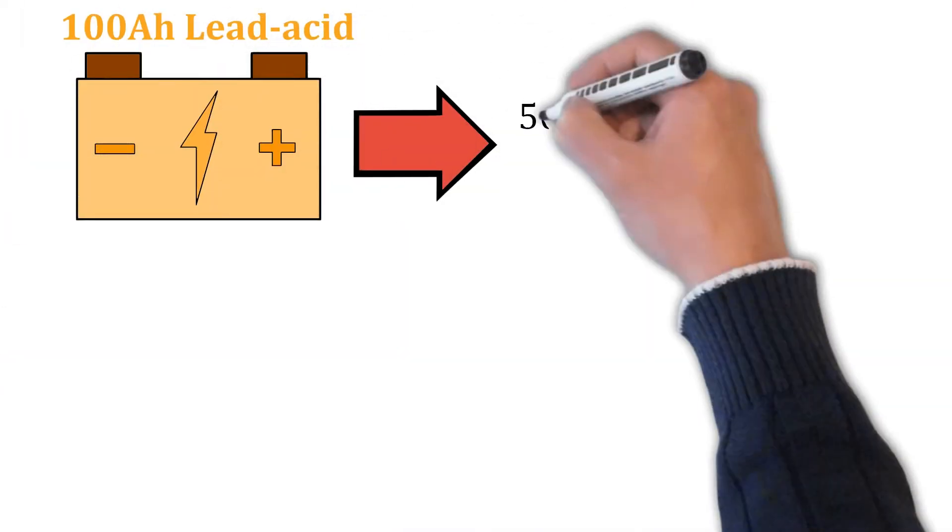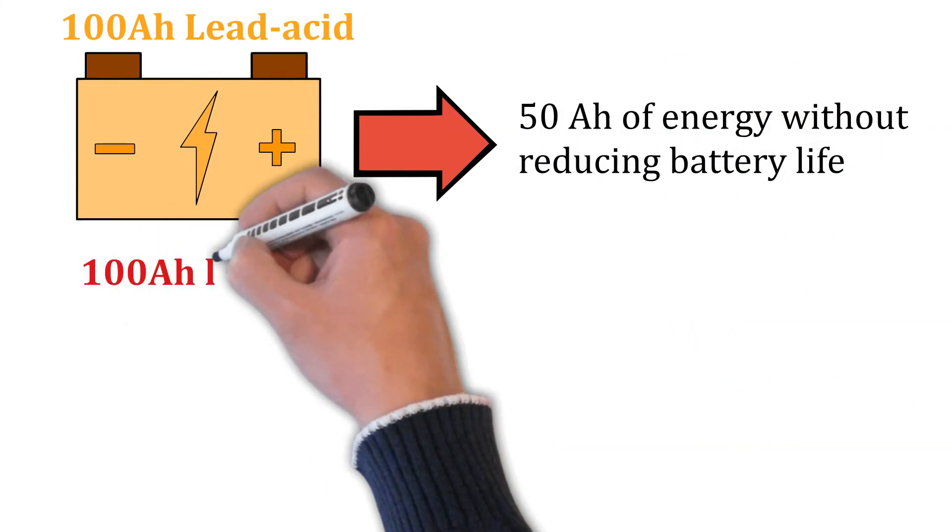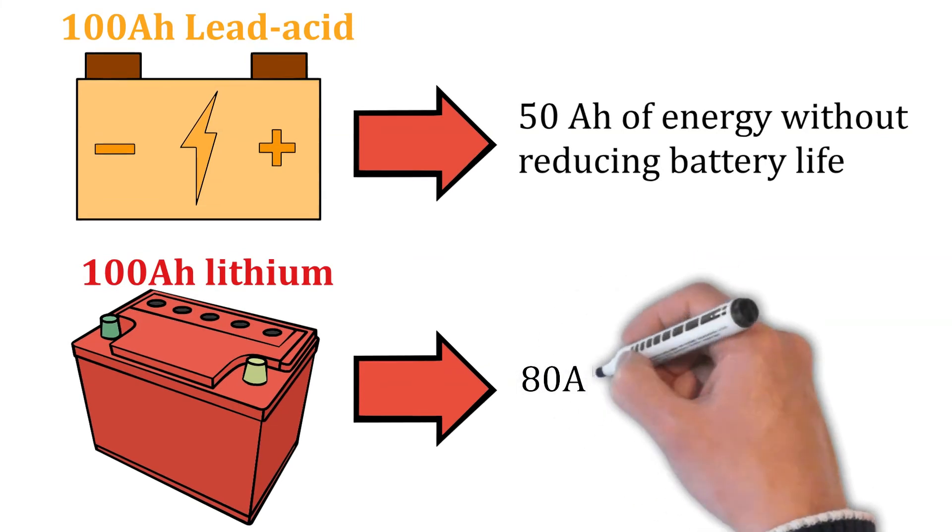For example, a 100Ah lead acid battery can only supply about 50Ah of energy without reducing battery life, while a 100Ah lithium battery can supply 80Ah.